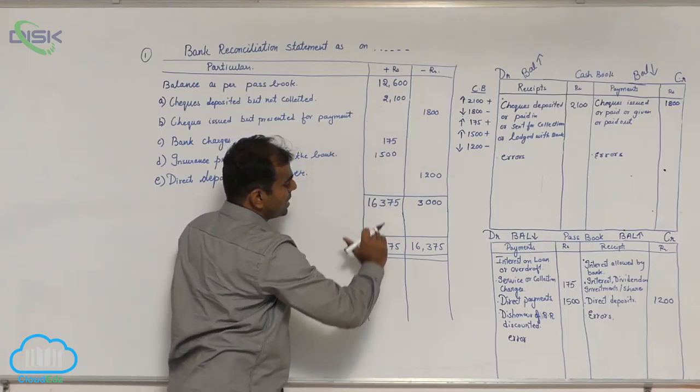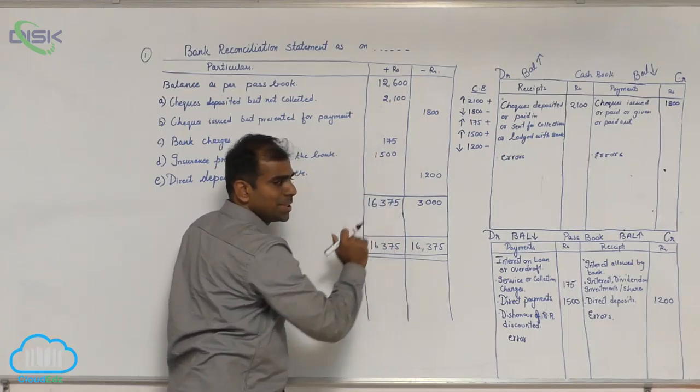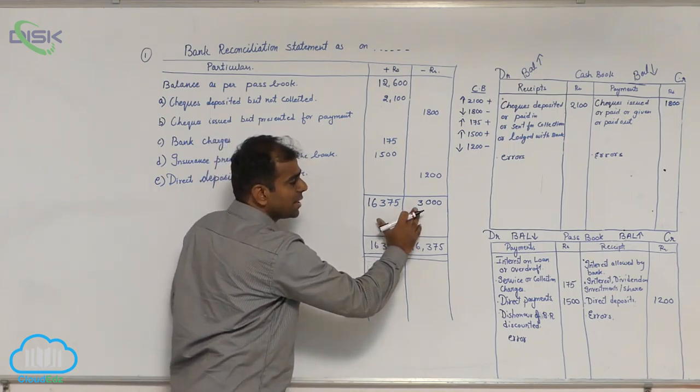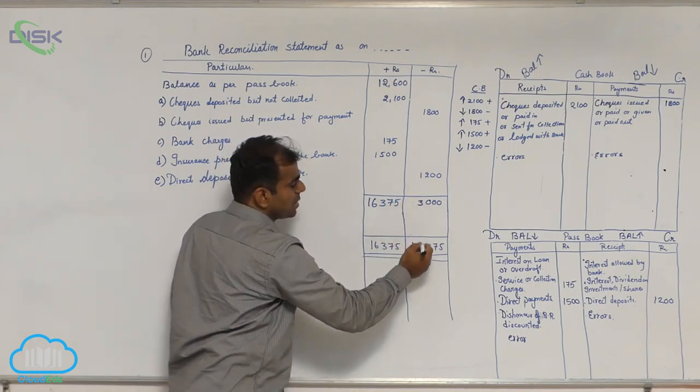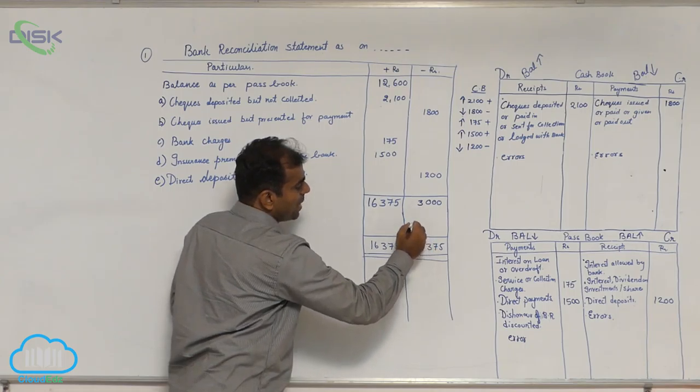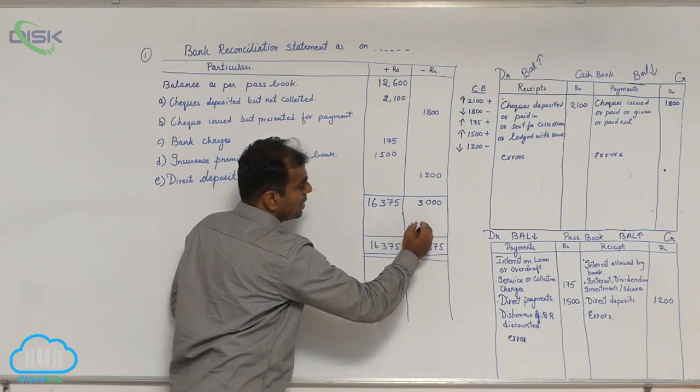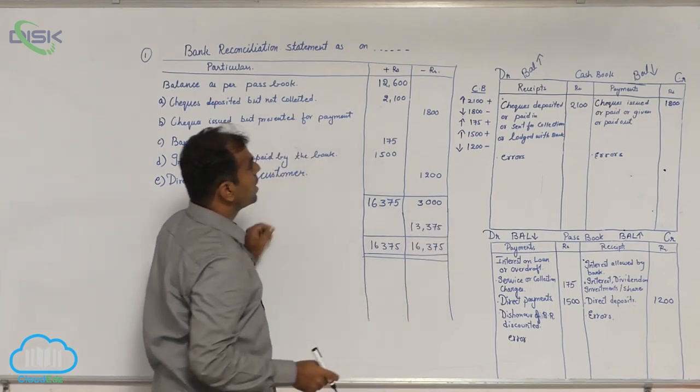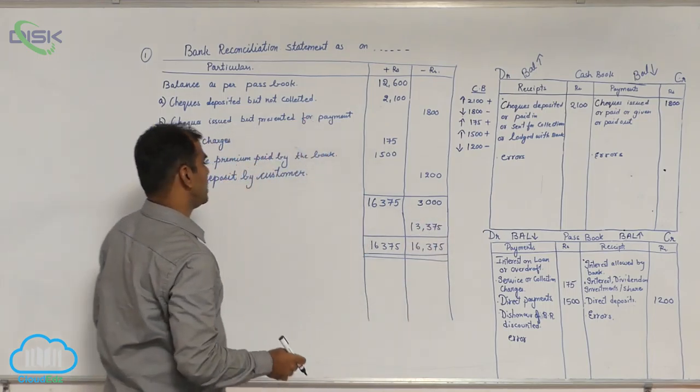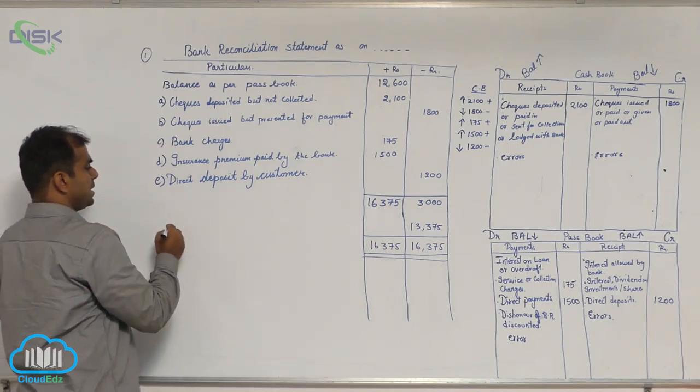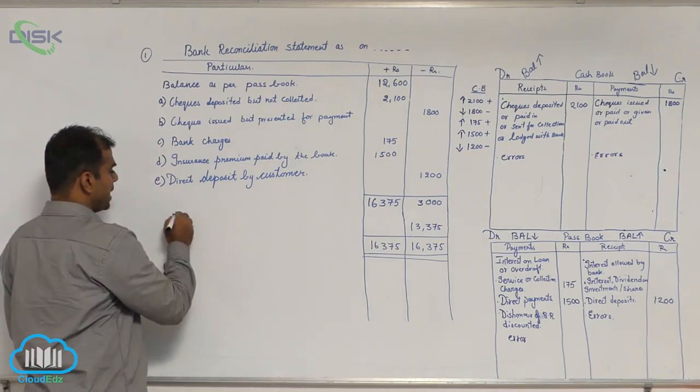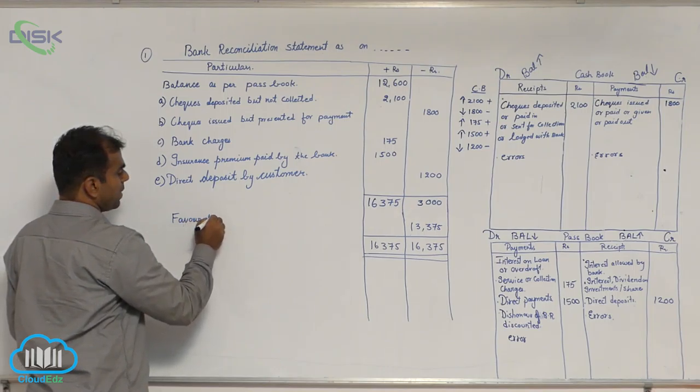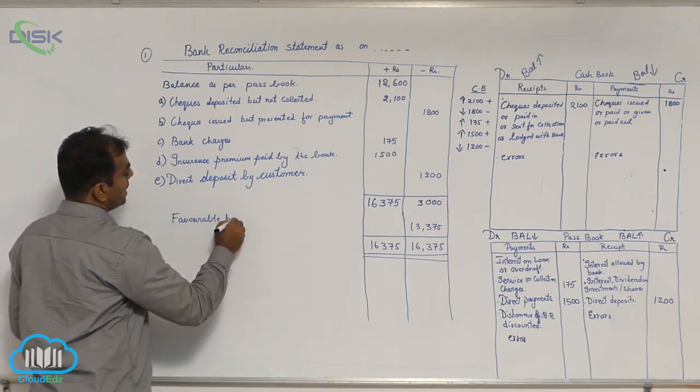The total of the plus column is more. We have taken it on both sides. From this total you remove whatever is the other total, so 16,375 minus 3,000 is 13,375. Since your plus column total was more, we will say the balancing figure as favorable balance.